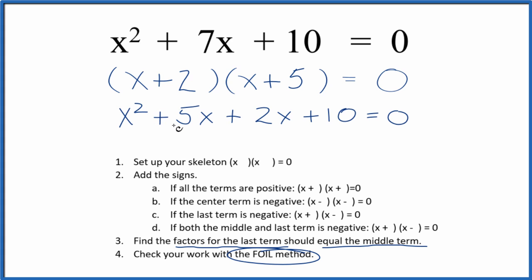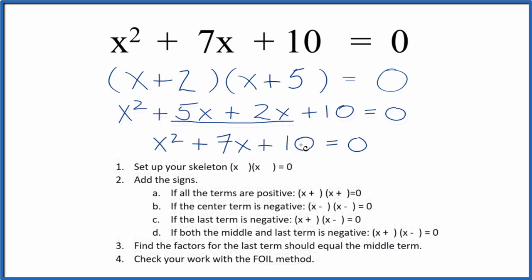That gives us x squared plus 5x plus 2x plus 10, and we can combine these terms to get x squared plus 7x plus 10. This is the same thing as we started with, so we've done this correctly. We've correctly factored the equation x squared plus 7x plus 10.